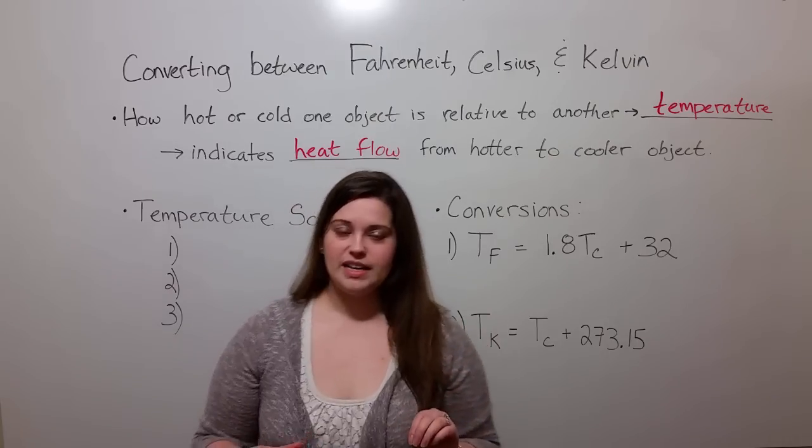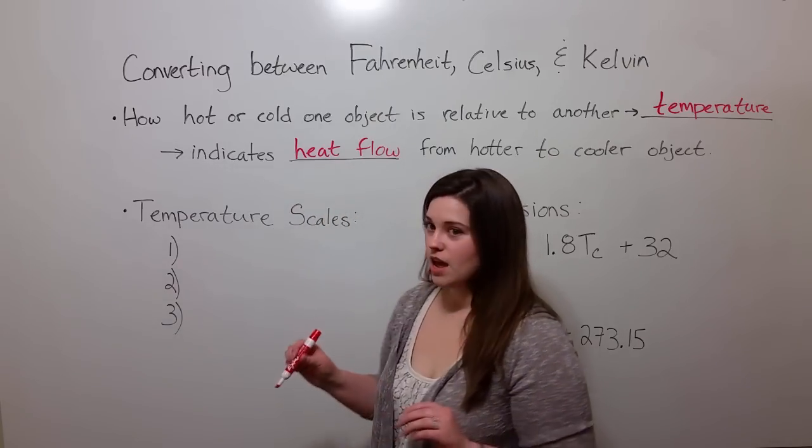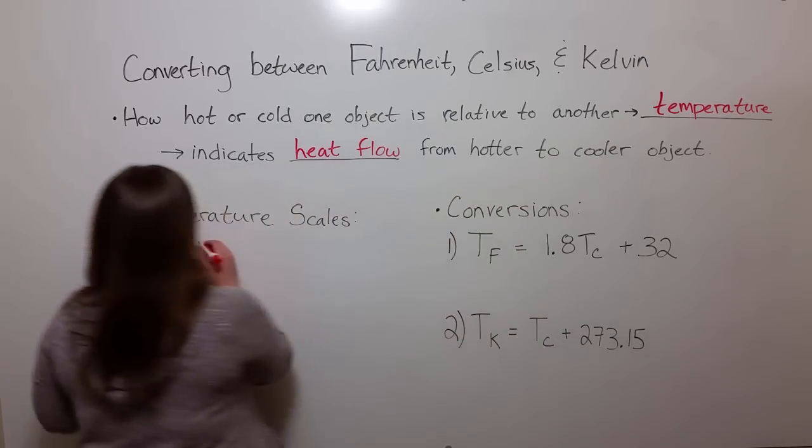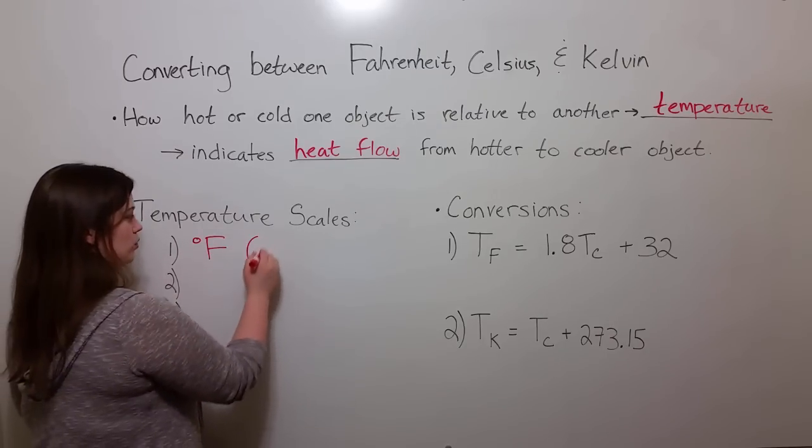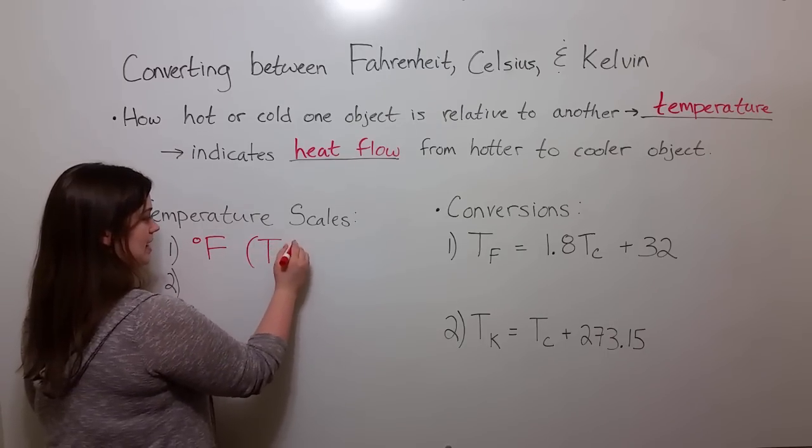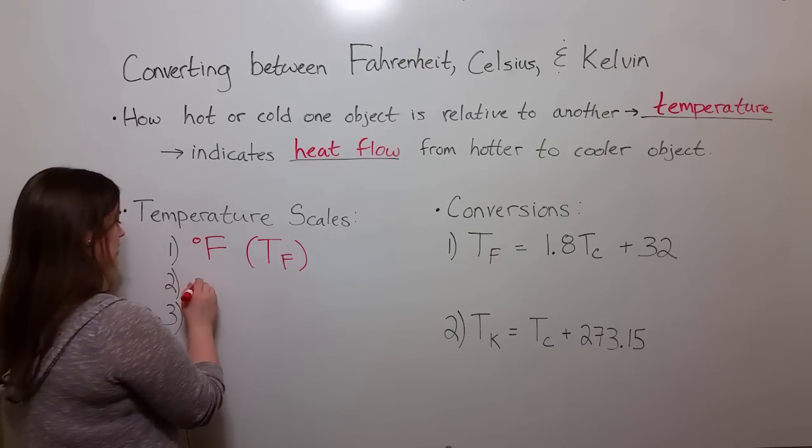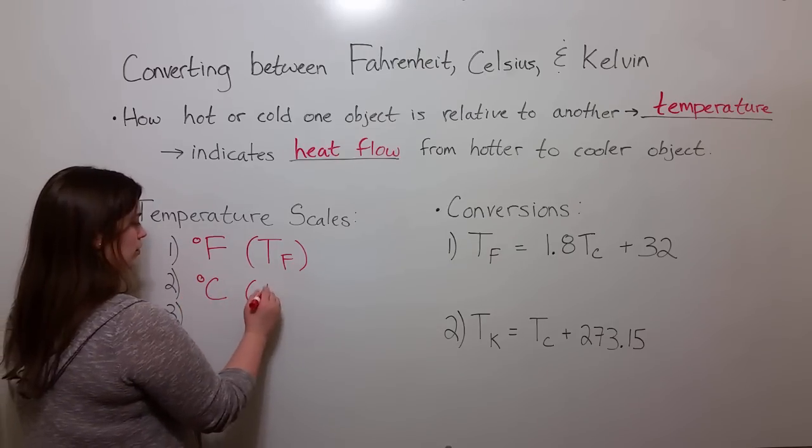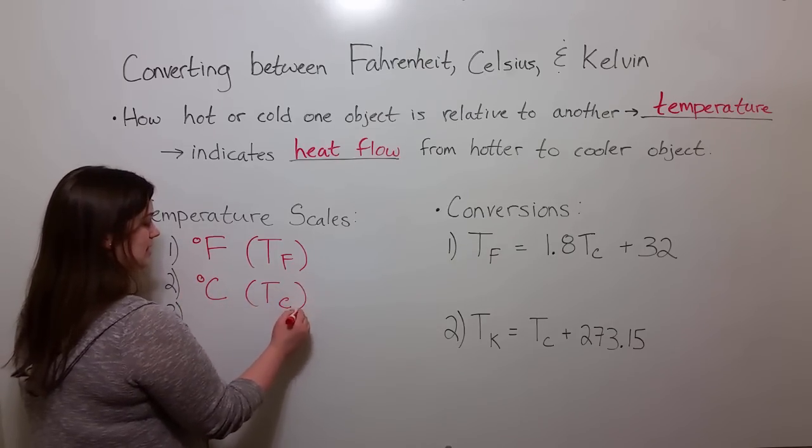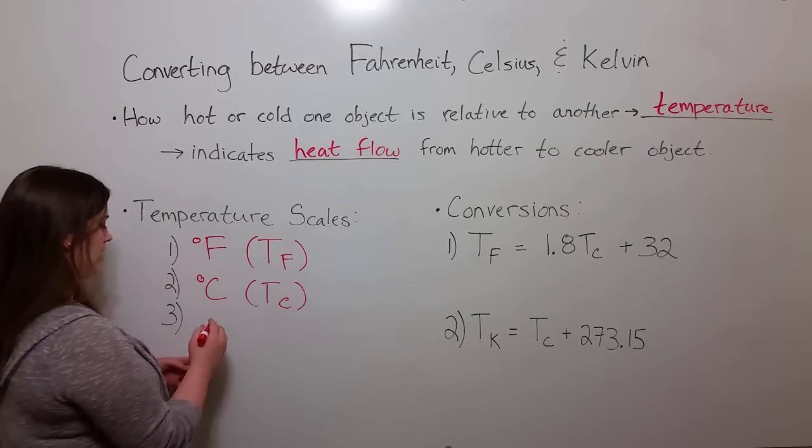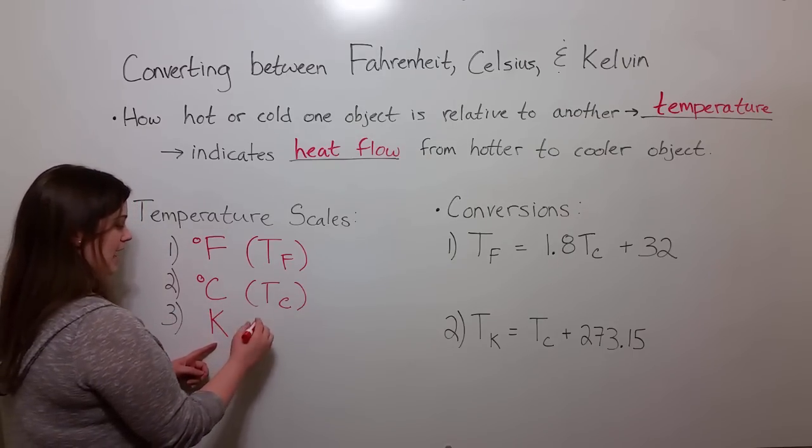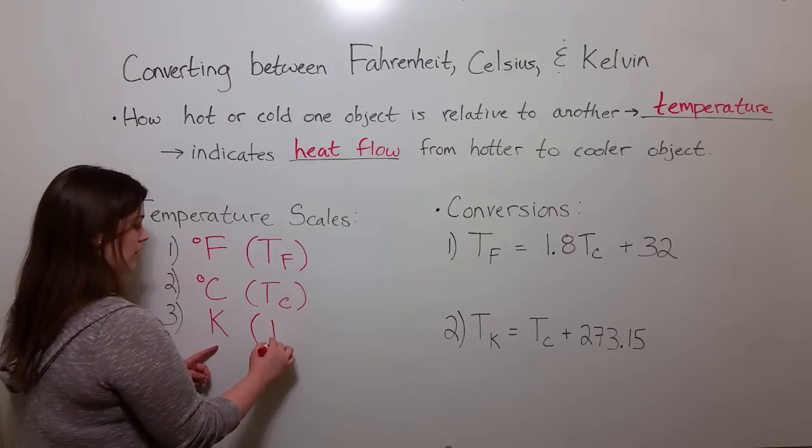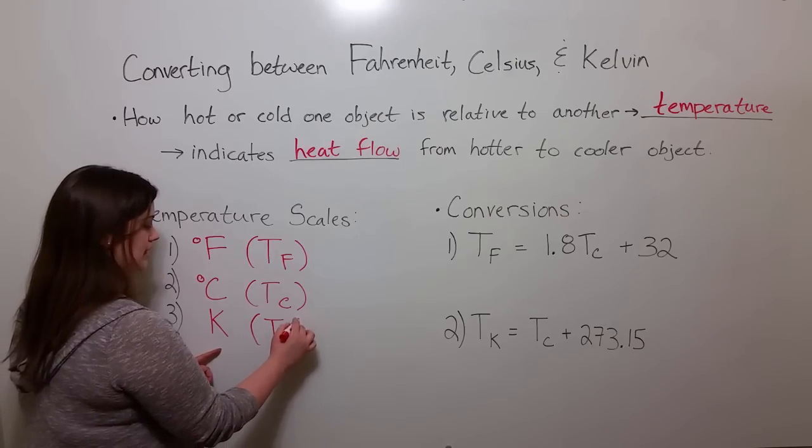Now let's talk about those three different temperature scales. There's Fahrenheit, so degrees Fahrenheit. In our calculations, we will abbreviate it as TF. There's also degrees Celsius, which we'll abbreviate in our calculations as TC. And there's also Kelvin. Kelvin does not have a degree symbol. It's simply K. And in our calculations, we'll call it TK.